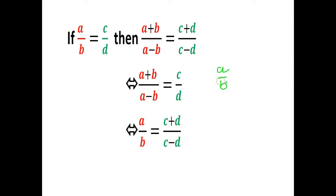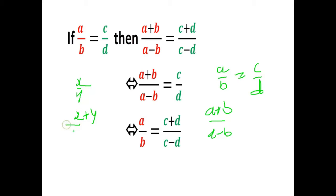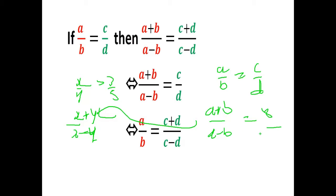The rule is: if A/B = C/D, then A/B can also be written as (A+B)/(A-B). That means if any problem has X/Y, I can rewrite it as (X+Y)/(X-Y). For example, if 3/5 is given, I can write it as (3+5)/(3-5), which is 8 over -2.